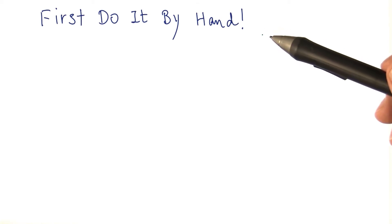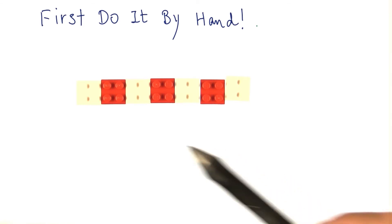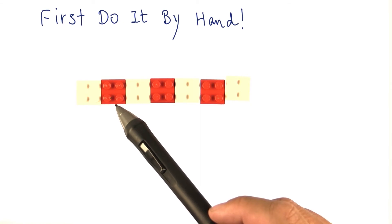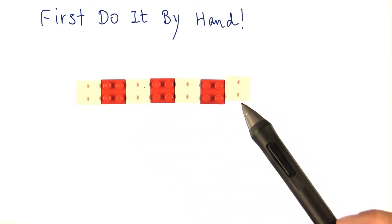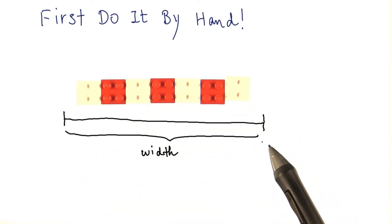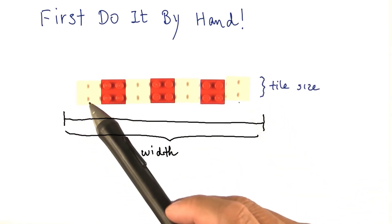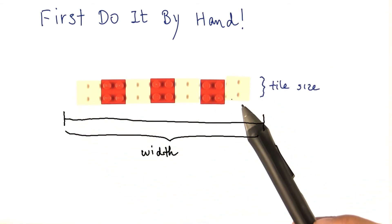Let me give you an example problem and show you how I would work it out by hand. So here's the problem. We're supposed to be putting tiles, white and red ones, alternating along a wall, and we're told the total width of the wall. We're also told the tile size.